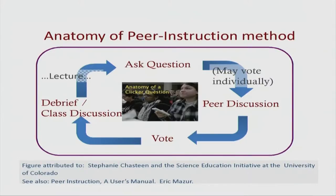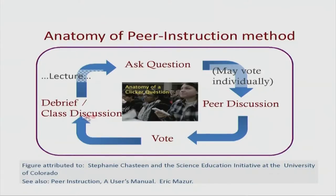Peer instruction is not just a multiple choice question. It is a question, then students voting, then discussion, then voting again, more discussion, and a teacher summary — all of it together is peer instruction. The way peer instruction should be implemented: the teacher creates and asks a multiple choice question, students vote individually, then they discuss with each other. Usually there is a second round of voting. Before the peer discussion, the teacher does not show the answer. After discussion, the teacher does a summary, debriefing, and resumes the lecture.